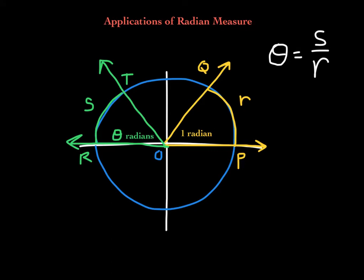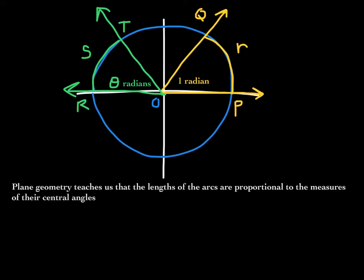In this diagram, notice that angle QOP has measure one radian and it intercepts an arc that is equal in length to the radius of the circle. Angle ROT has measure theta radians and it intercepts an arc of length S. Plane geometry teaches us that the lengths of the arcs S and R are proportional to the measures of their central angles, theta and one radian. In other words, we can set up a proportion: S is to R what theta is to one.